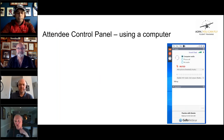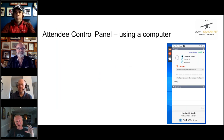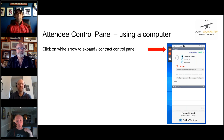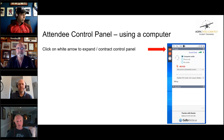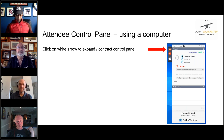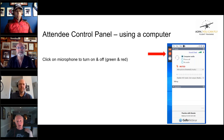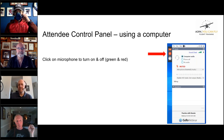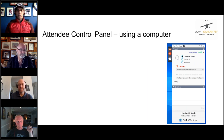If you're using a computer, your screen should look like what's shown. If you're only seeing the little tabs on the left, that means you are minimized. Hit the little white arrow in the orange to expand it and see the connections for your microphone and speakers. You are muted at this point, so you don't have to worry — we won't hear you.